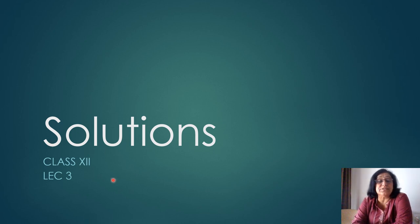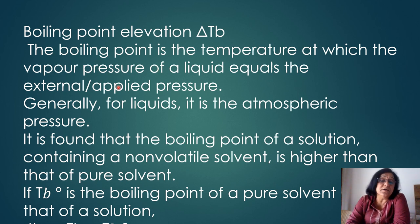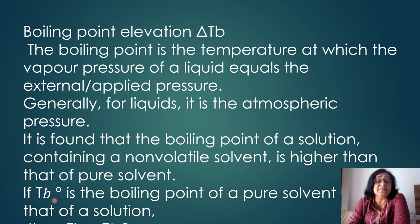Solutions lecture 3 — boiling point elevation, the next colligative property. The boiling point is the temperature at which the vapor pressure of the liquid equals the external pressure. Generally for liquids it is the atmospheric pressure. It is found that the boiling point of a solution containing a non-volatile solute is higher than the boiling point of the pure solvent. So Tb0 is the boiling point of the pure solvent and Tb is the boiling point of the solution, so Tb is greater than Tb0.